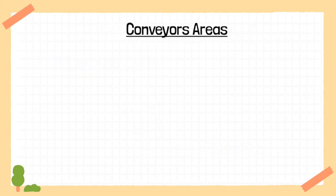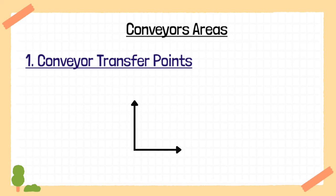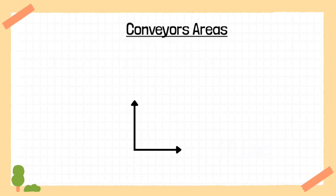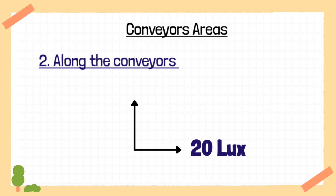Next, let us look into the conveyor area. At conveyor transfer points we should have 40 lux in horizontal direction, and all along the conveyors we should have 20 lux in horizontal direction.